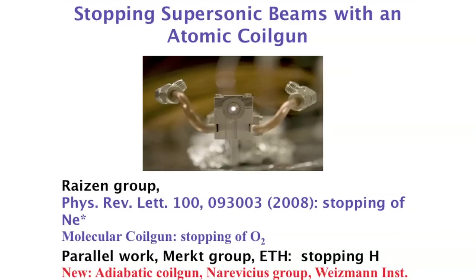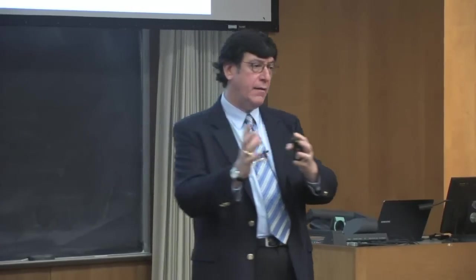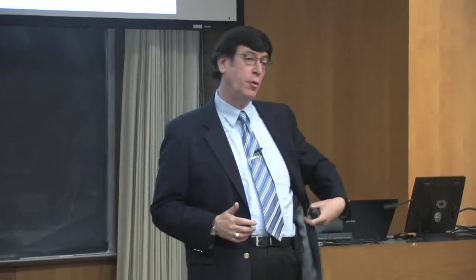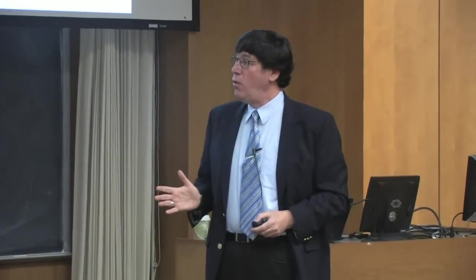Now around 20 groups around the world are building these atomic or molecular coil guns because they are simple and robust. The most recent development, I think, really clinches it — work done by Ed Narevicius and his group. He built something we had proposed together when he was my postdoc, and made it work at the Weizmann Institute: an adiabatic coil gun which is essentially a three-dimensional trap that catches atoms in the moving frame and gently brings them to rest.